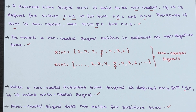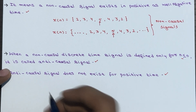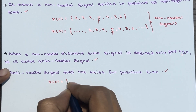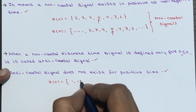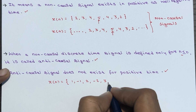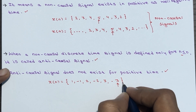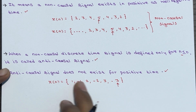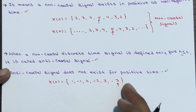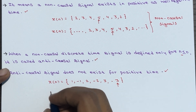Let's see an example for anti-causal signals. So x of n is equal to 1, minus 1, 2, minus 2, 3, minus 3, at n equal to 0. This exists only for the negative time; it does not exist for the positive time. So this is an anti-causal signal. This example has finite duration.